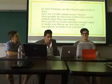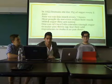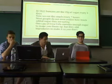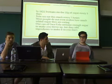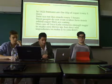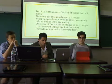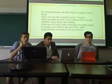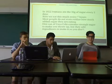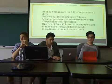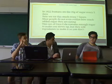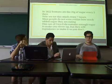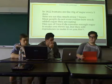Cory will talk about problems with added sugar. In 1822, humans consumed only about 35 grams of sugar every 5 days, whereas now humans consume that much every 7 hours in the US. Most people don't even realize how much added sugar they're eating. One can of Coca-Cola contains enough sugar to make you throw up, but they add ingredients like phosphoric acid to make it more sour, so your brain doesn't recognize all the sugar in it. There's just so much added sugar that people don't even realize it's there.